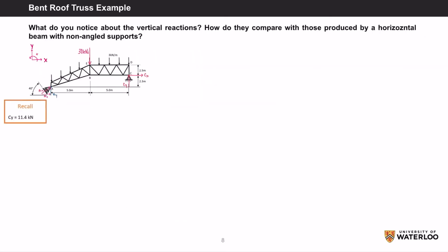What do you notice about the vertical reactions? How do they compare with those produced by a horizontal beam with non-angled supports? Currently, we only know CY as we never really found out what AY was. We can find out by using our equilibrium equations. The net force in the Y direction is equal to 0, which is equal to negative 30 kN plus CY plus AY. Remembering that CY is 11.4 kN, we get AY equals 18.6 kN. We can see that the vertical reactions are not equal due to point A being angled.